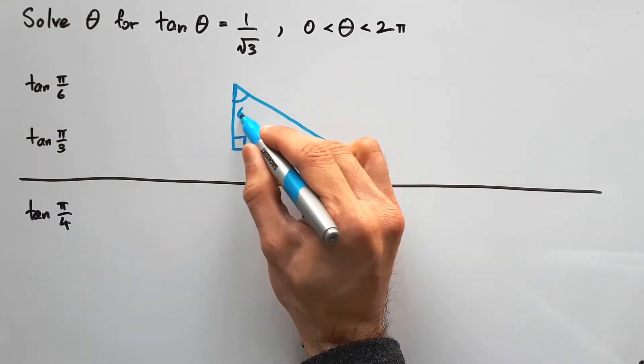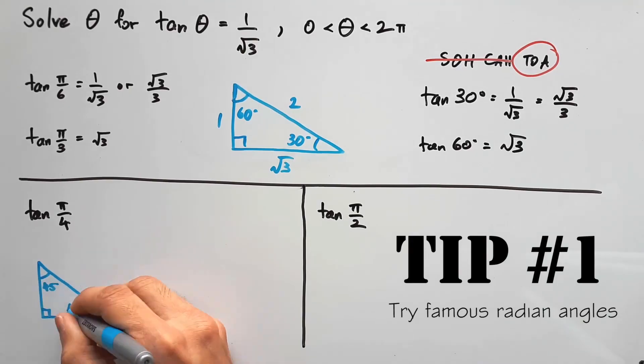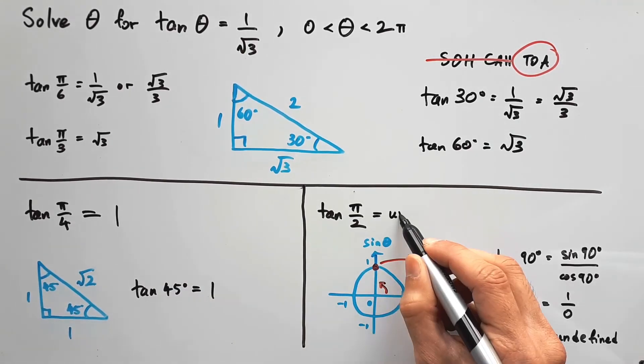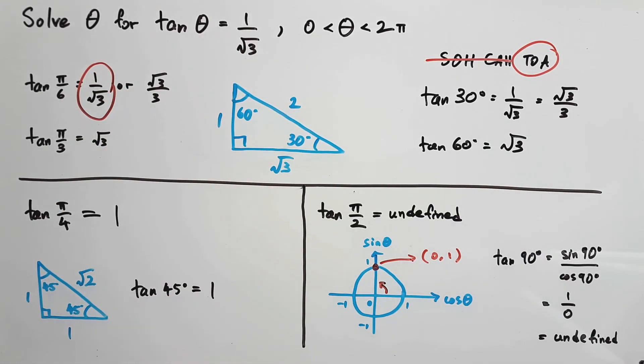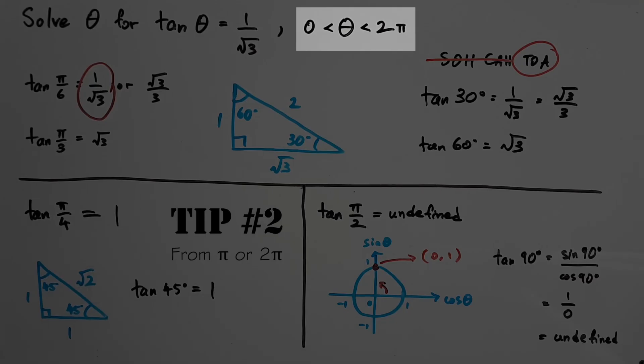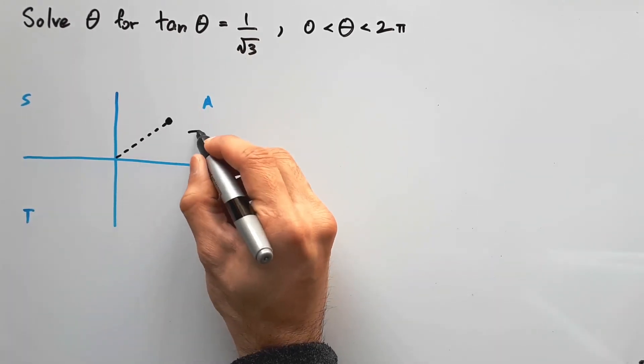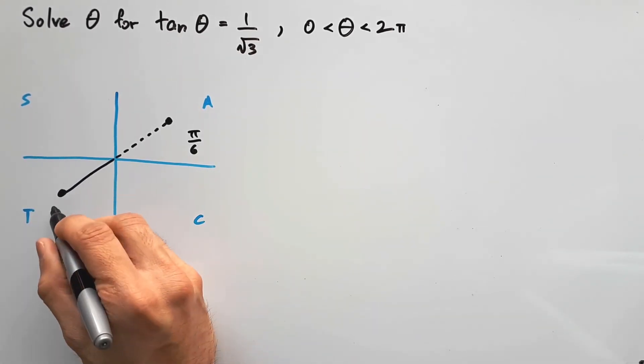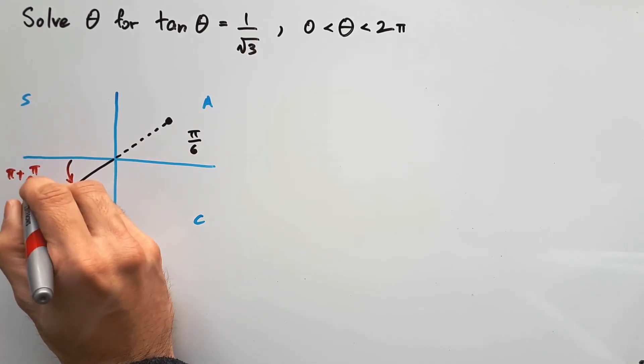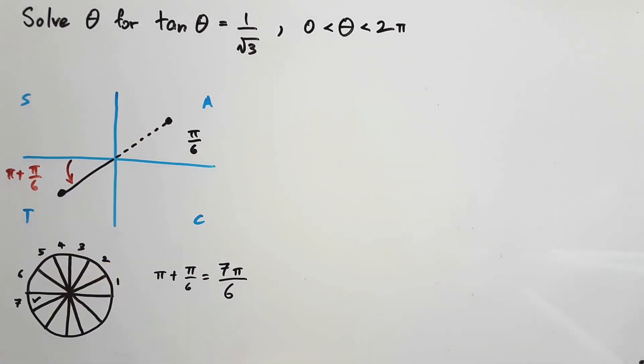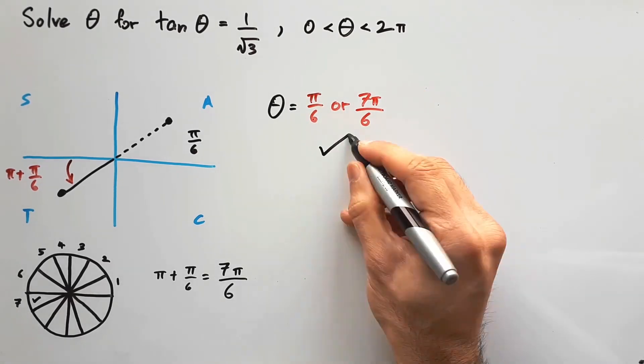Okay, so using tip number 1, we find tangent π/6 to be the best match. Their signage is the same, but you still need to consider tip number 2 because theta is somewhere between 0 and 2π, which covers 4 quadrants. Positive tangent is in the first or third quadrant, so take π and add π/6 to get our second answer. So theta is π/6 or 7π/6. Done!